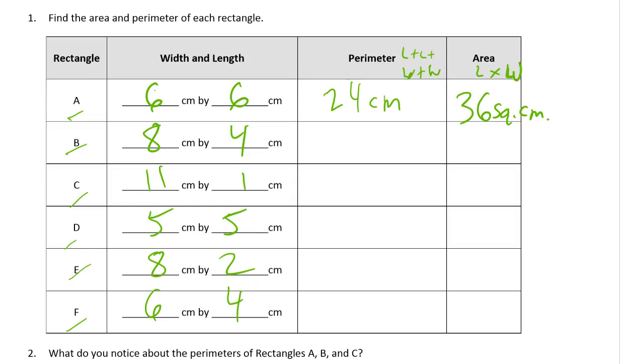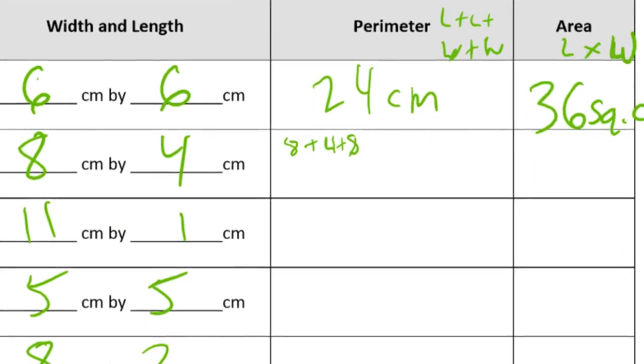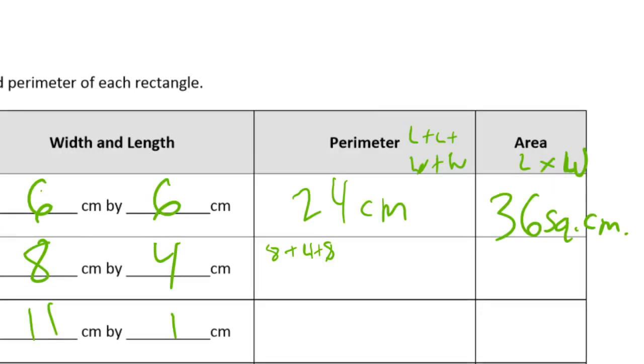Because it happens a lot for third graders to mix up and multiply to get perimeter and add to get area. So this is 8 plus 4 plus 8 plus 4, that's 2 twelves, which is 24 centimeters.